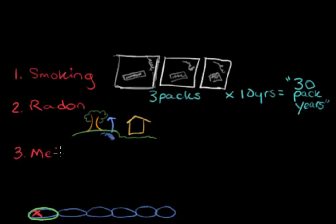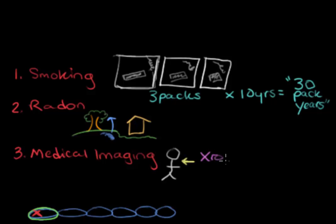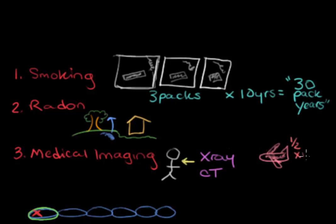Finally, a third main source of mutation in lung cancer is medical imaging. If a person needs a picture taken of the inside of their chest, it might be taken with radiation in the form of an x-ray or a computed tomography scan — more familiar as a CAT scan. This person is receiving a large dose of radiation that can be harmful to their cells. To give an idea of the dose: a plane ride from New York to California delivers about half the radiation of an x-ray, and a CT scan delivers about 100 times the radiation of a single x-ray.